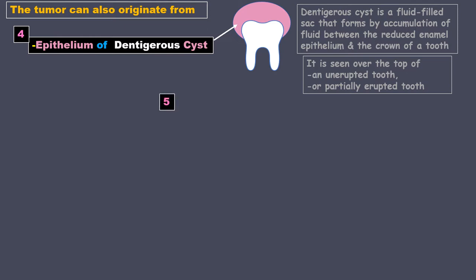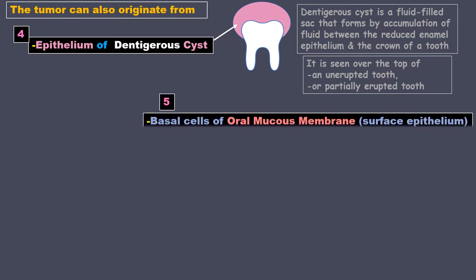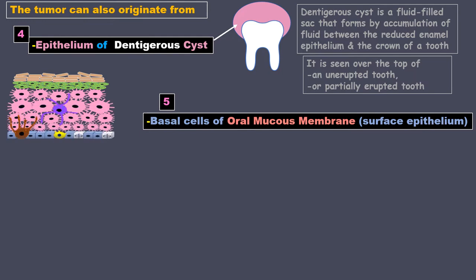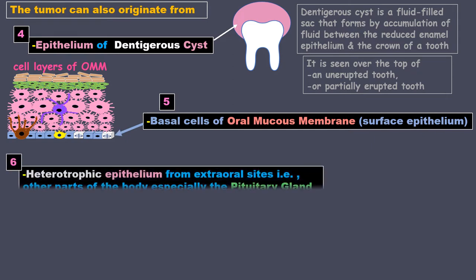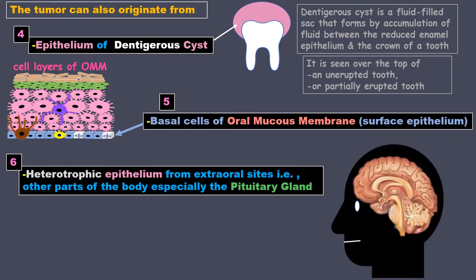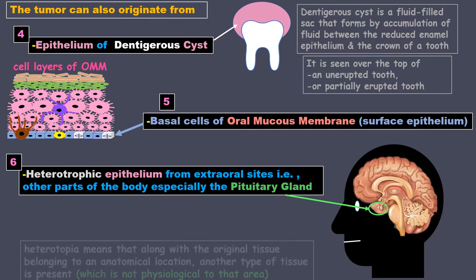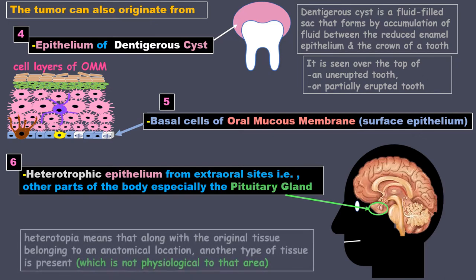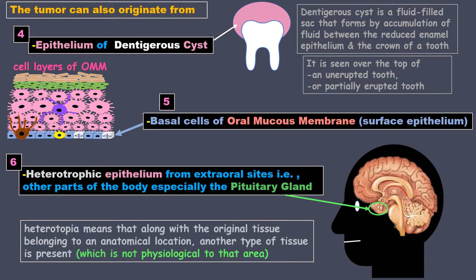The tumor can also form from the basal cells of the oral mucous membrane. Down below these cuboidal cells are the basal cells. In number 6 we have heterotopic epithelium from extra-oral sites, especially the pituitary gland. Heterotopia means that along with the original tissue belonging to an anatomical location, another type of tissue is present which is not physiological to that area. So here, apart from odontogenic cells, cells of the pituitary gland can also be seen in the tumor.